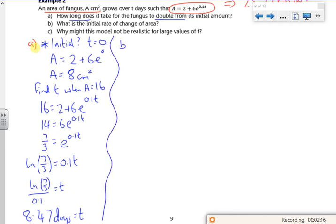So part B says, what is the initial rate of change? So initial rate of change, or rate of change is dA, because A is the equation, by dt. So that's what I want. So dA by dt. That's what I want to find.